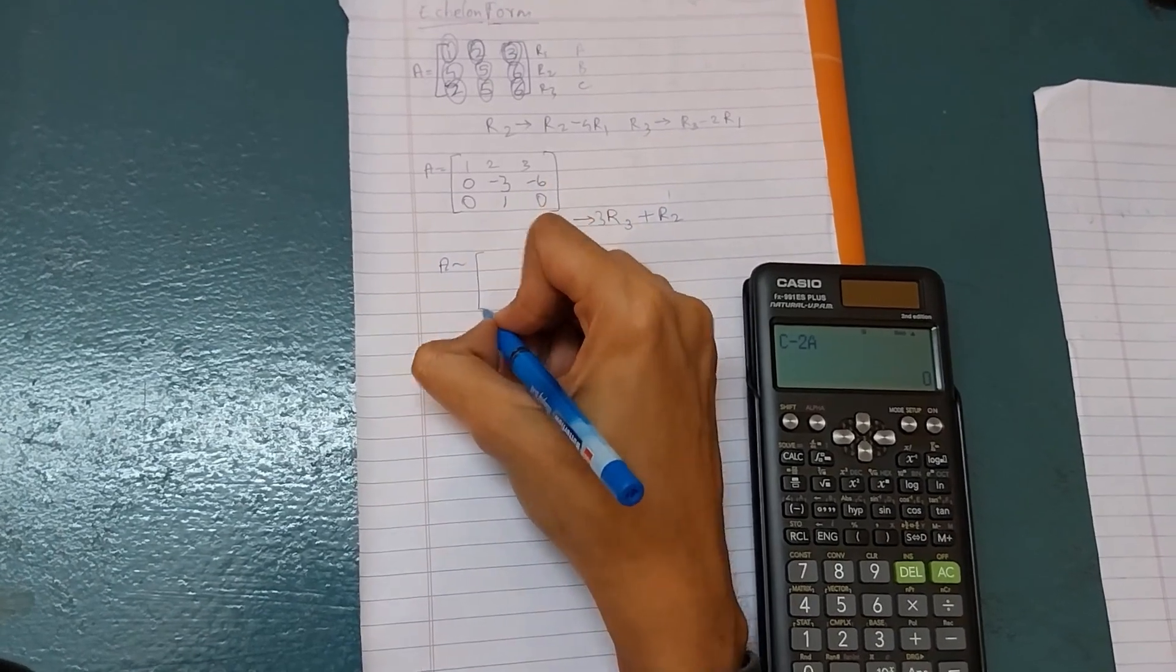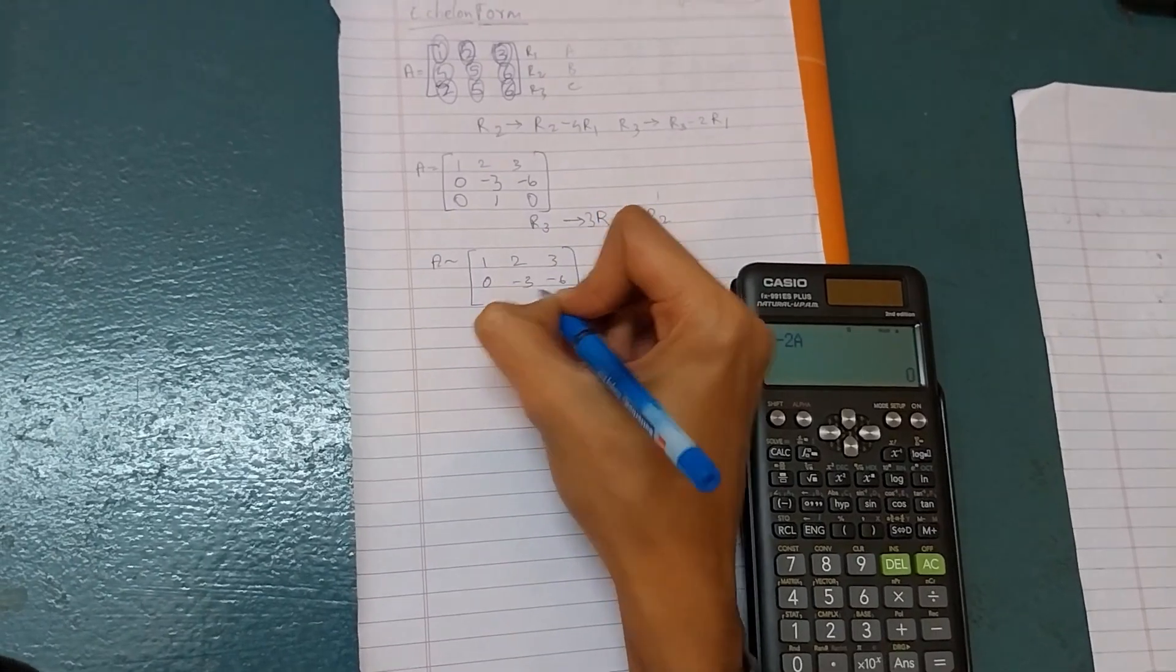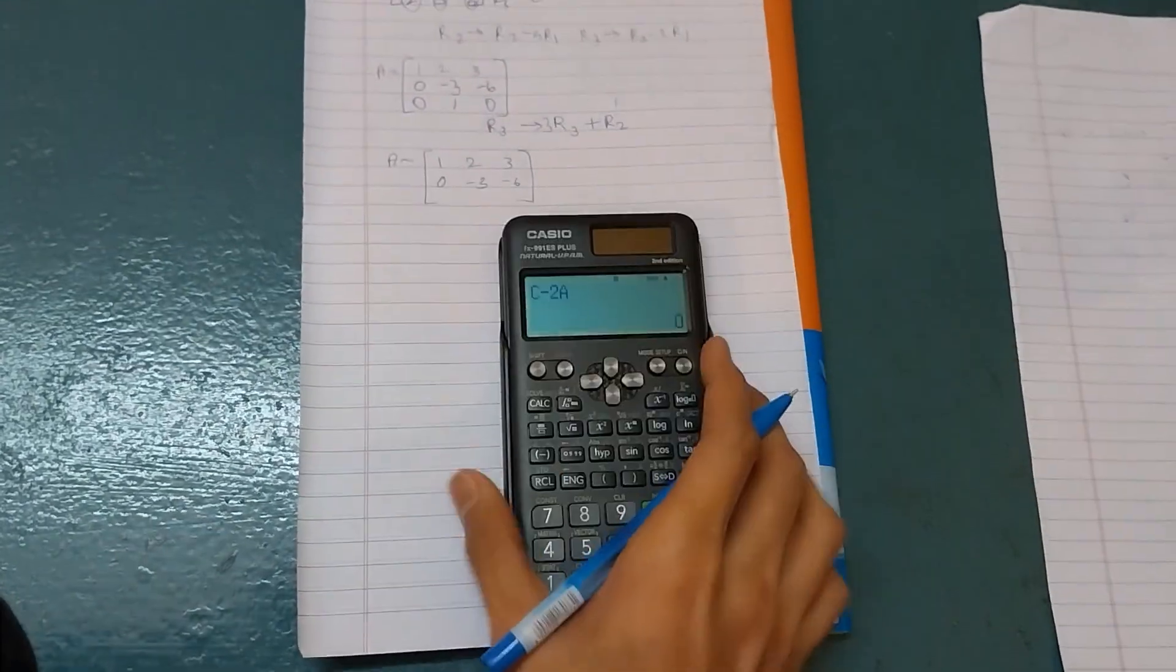First I will write the first two rows. That is A equals 1, 2, 3, 0, minus 3, minus 6. And here it will be, write the equation.